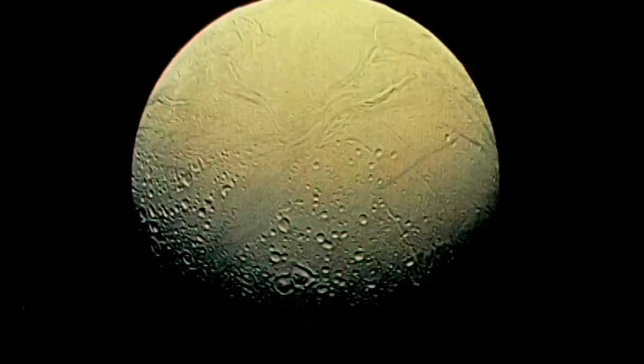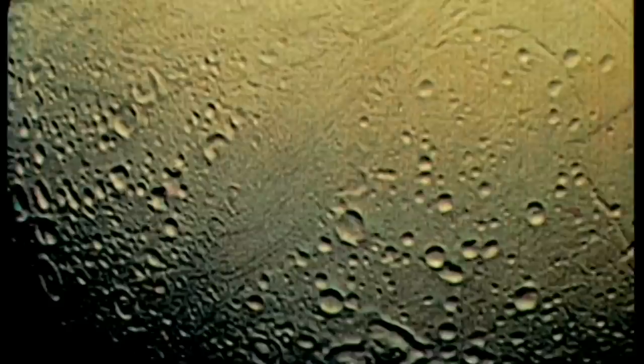Voici Encelade, presque deux fois la taille de Mimas avec 500 km de large. Des plaines de glace, probablement formées par des remontées d'eau liquide à sa surface. Des fontaines de glace peuvent encore jaillir, car Encelade est comprimée par les forces d'attraction de ses voisins.